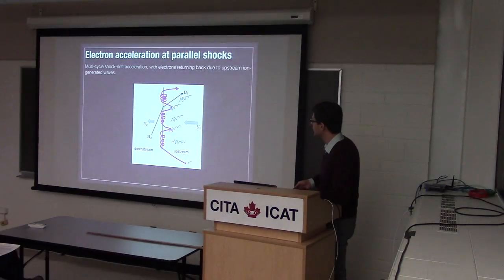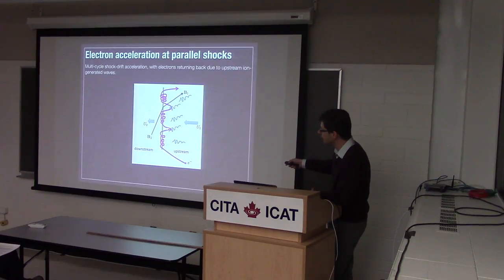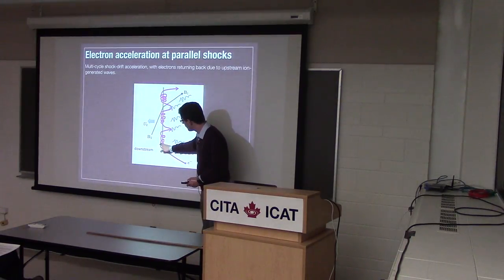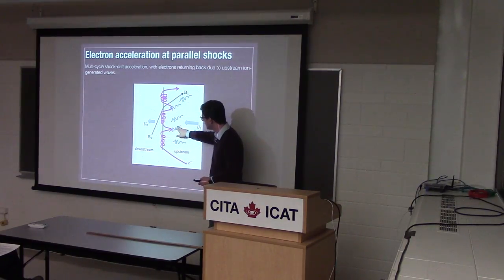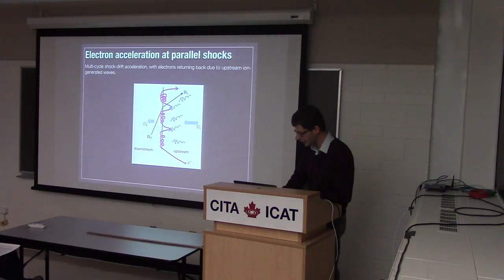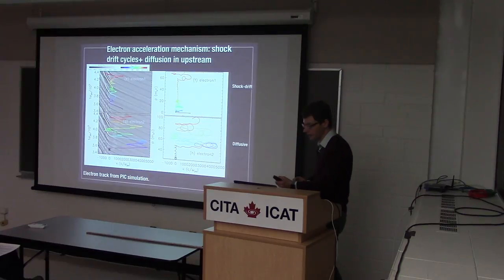Qualitatively, why electrons are less efficient is that they have to undergo lossy cycles of shock drift acceleration at the shock. They encounter the shock, sit on it, gain enough energy to escape into the upstream, scatter on waves generated by the ions, go back for more — each cycle is lossy, so electrons have a handicap.